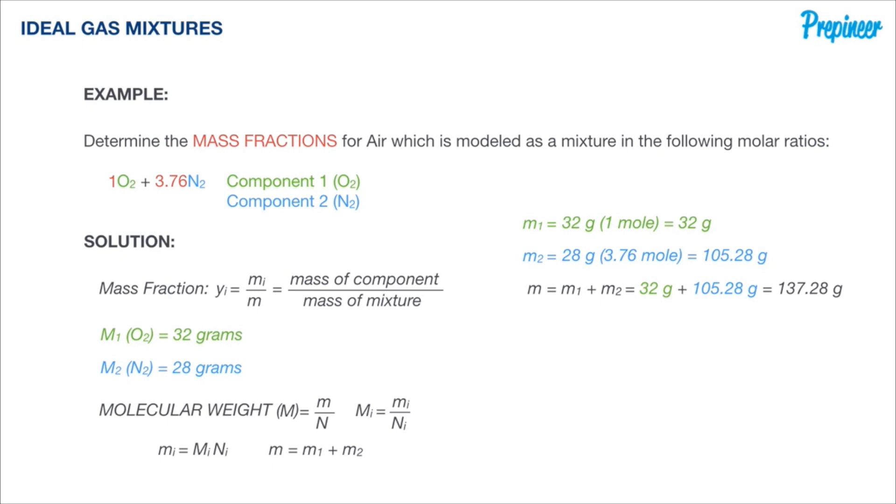Now we can find the individual mass fractions of each component. For oxygen, we're going to have 32 divided by 137.38, or a mass fraction of 0.2331. For nitrogen, we're going to have 105.28 divided by 137.38. Adding those together again is going to add up to one, that's our check. It fulfills our rule for mass fractions, so all the mass fractions add up to one.